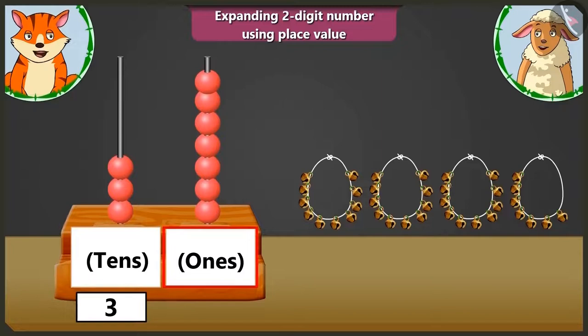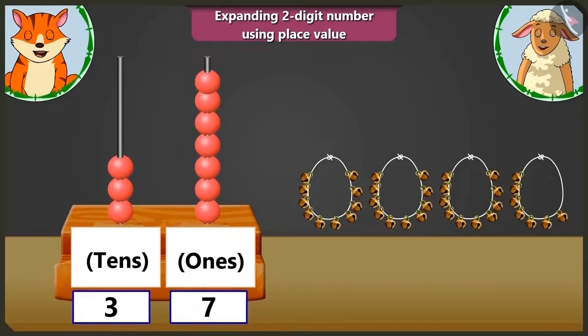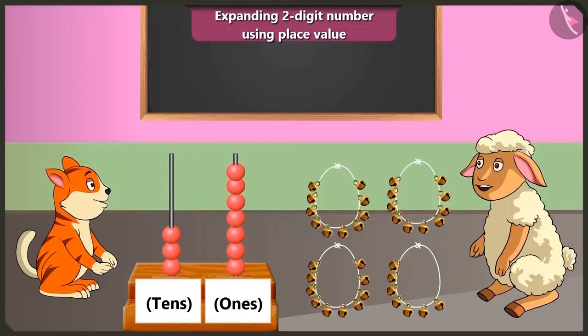Now in the ones box, there are seven beads. So we have to write seven. Now the number it makes is thirty-seven. Very good. Come on, now let us go.